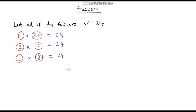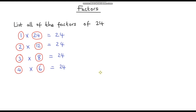Let's move on to 4. Is 4 a factor of 24? Well 4 times 6 is 24, so 4 and 6 are also factors of 24. Now let's move on to 5. Is 5 a factor of 24? Well 5 times 5 is 25 and 5 times 4 is 20, so no, 5 doesn't go into 24 exactly. If we did 5 times 4 that would give us 20 and we would have a remainder of 4. So 5 is not a factor of 24.